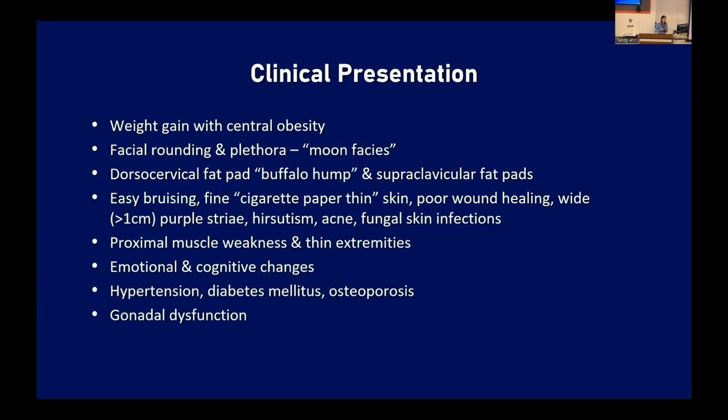Patients with Cushing's will also have proximal muscle weakness, and there are significant emotional and cognitive changes — depression is very common in this population. Comorbid issues associated include hypertension, diabetes, osteoporosis, and occasionally gonadal dysfunction.